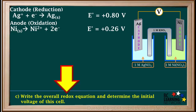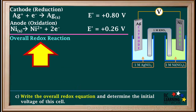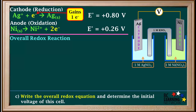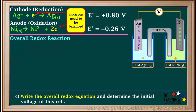Part C asks us to write the overall redox equation and find the initial voltage of the cell. Unless otherwise stated, we always assume we are at standard conditions. We get the overall equation by adding up the half reactions at the cathode and the anode. Notice Ag⁺ gains one electron while nickel loses two electrons. Electrons need to be balanced so that the number lost equals the number gained, so we multiply the silver half reaction by two.